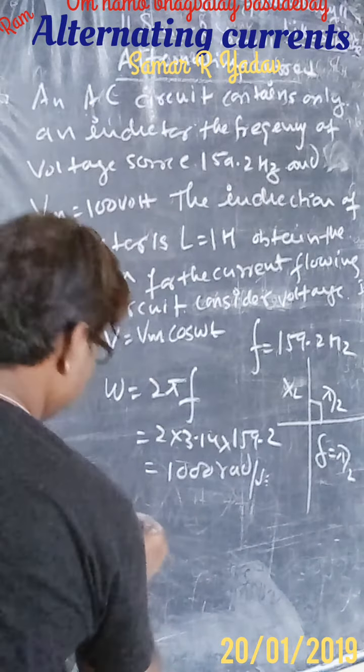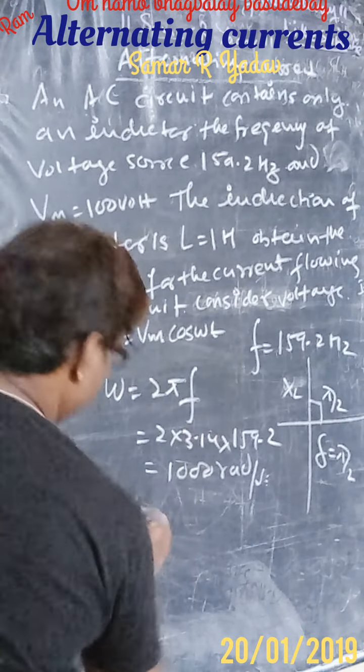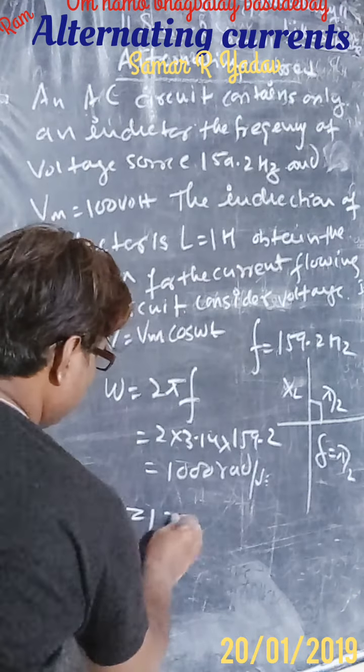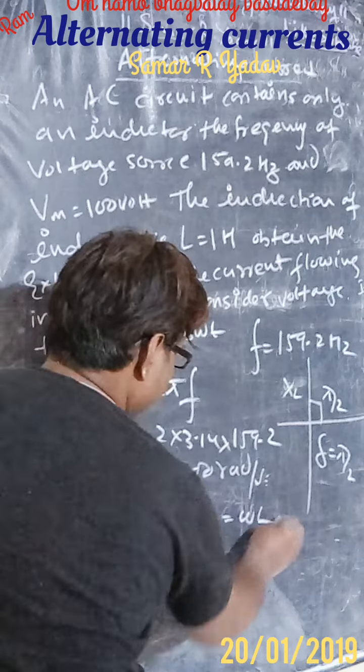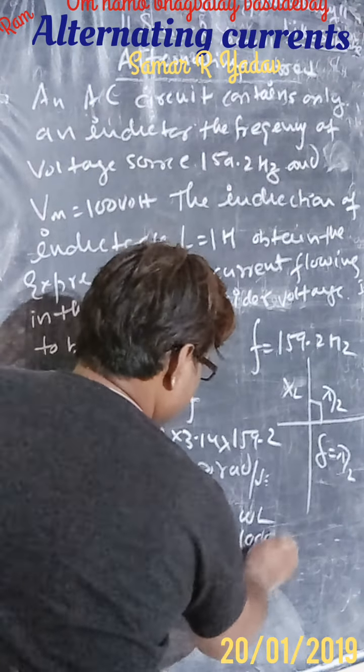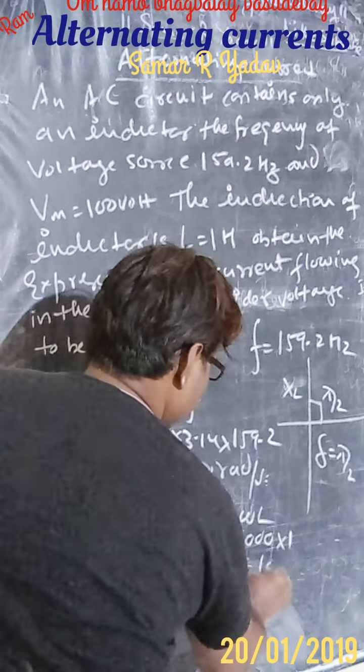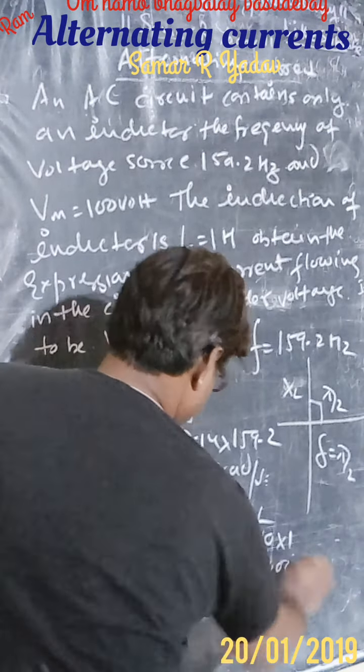Now the second point is that we have z, mod z equals XL equals omega L equals 1000 into 1, equals 1000 ohms.